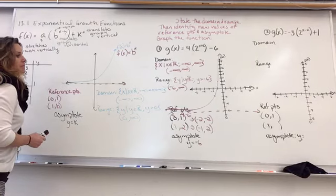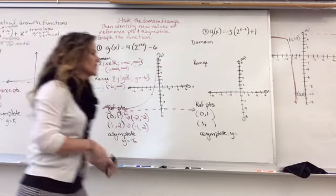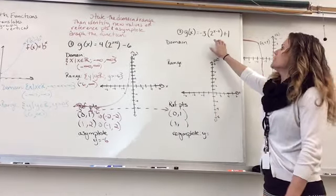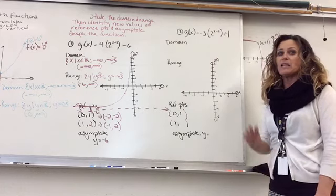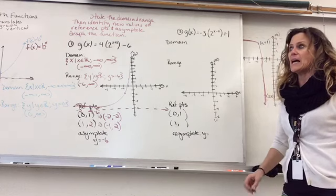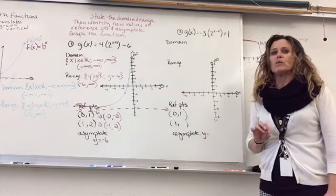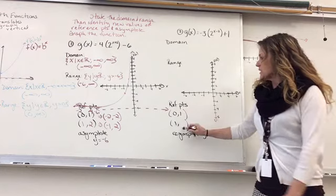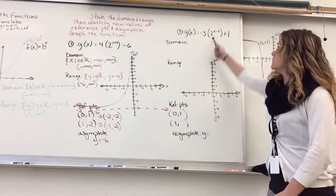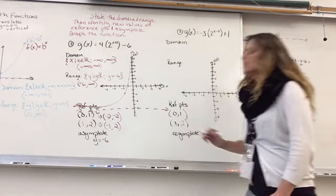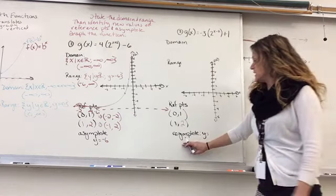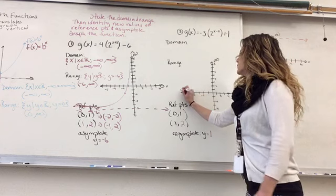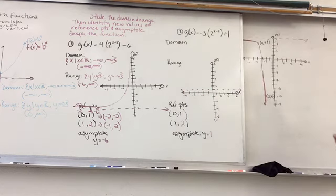Now we have another function where the A value has a negative on it, so we should be doing some flipping. If you remember, A stretches the graph vertically, which means it's going to flip on the X-axis. Reference points are (0, 1) and (1, B) — B happens to be 2 again. I need to get my asymptote in there: Y equals K, and my K value is 1, so at positive 1 I have an asymptote.